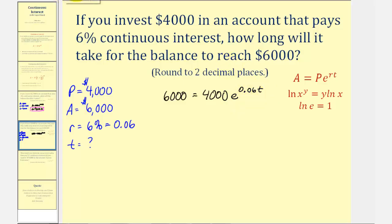So to begin, let's go ahead and divide both sides by 4,000. Now let's simplify. This would be 6,000 divided by 4,000, which simplifies nicely to six-fourths or three-halves. So we have three-halves equals E raised to the power of 0.06T.